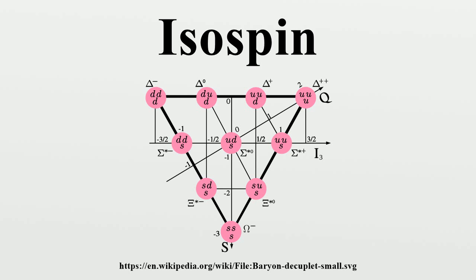For example, a proton-neutron pair can be coupled in a state of total isospin 1 or 0. It is a dimensionless quantity, and the name derives from the fact that the mathematical structures used to describe it are very similar to those used to describe the intrinsic angular momentum.